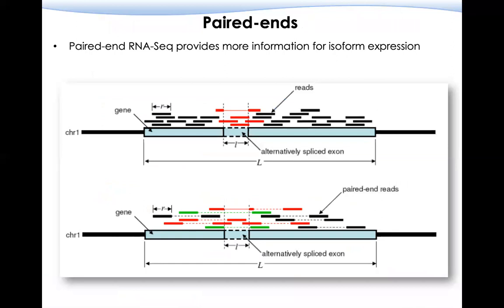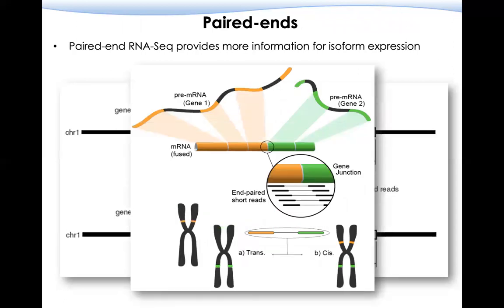The next consideration is whether to use paired-end or single-end sequencing. Due to advances in sequencing technology, paired-end sequencing is now very affordable. Paired-end sequencing gives higher sensitivity for detecting different isoforms and can help identify gene fusions or trans-splicing signals, because both ends of the molecule are sequenced.